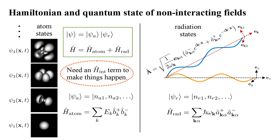So far in this series, we have developed quantum field theories for the electron in a hydrogen atom and for photons in the radiation field. To combine these, we need a description of how these fields interact. This should take the form of an interaction Hamiltonian, H-hat interaction.